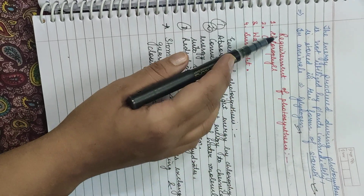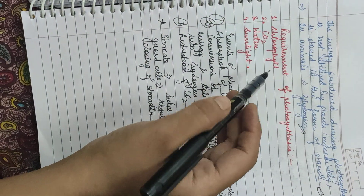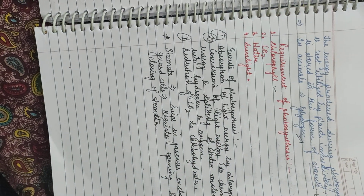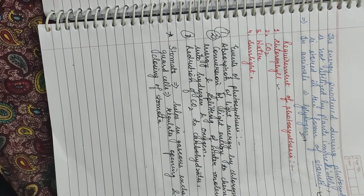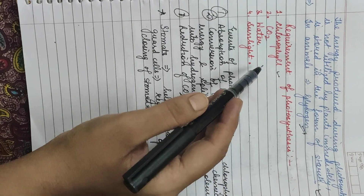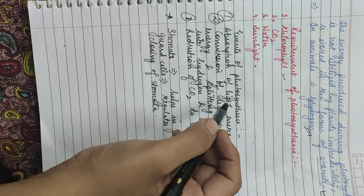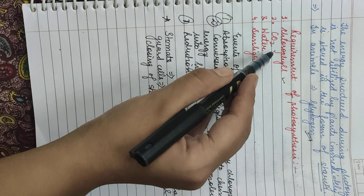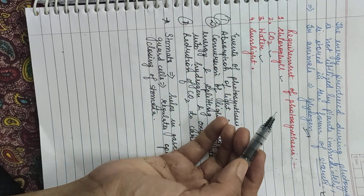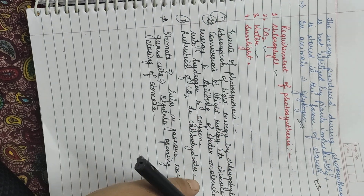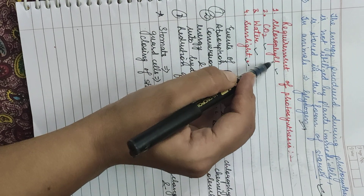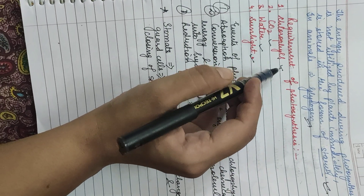What are the requirements of photosynthesis? First, chlorophyll, which the plant already has — most photosynthesis happens in leaves because they are the green parts of the plant and contain chlorophyll inside the chloroplast. Then carbon dioxide, which is taken in through stomata. Water, which the plant gets through its roots. And sunlight, which is captured by chlorophyll.